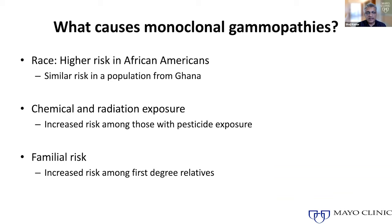A common question is: what causes monoclonal gammopathies? We don't completely understand why plasma cells start dividing without control, but we do know certain subgroups are at higher risk. African Americans have a roughly threefold higher risk compared to Caucasians. People exposed to certain chemicals or radiation have a higher risk. Similarly, first-degree relatives of people with a monoclonal gammopathy have a two- to threefold higher risk of being diagnosed with one.